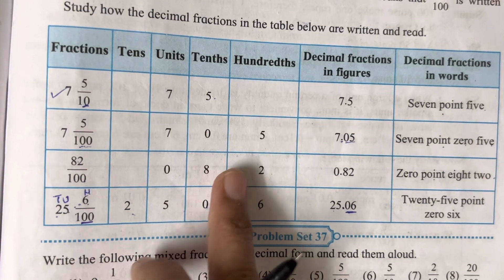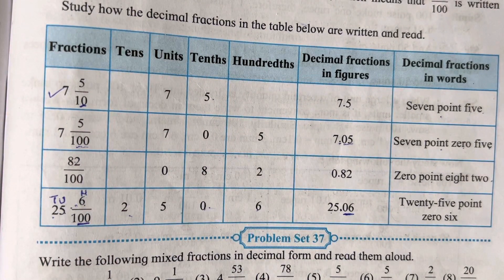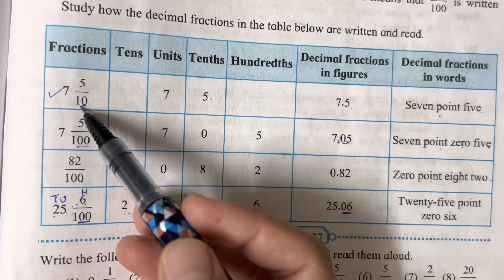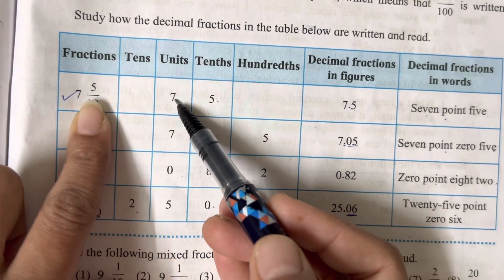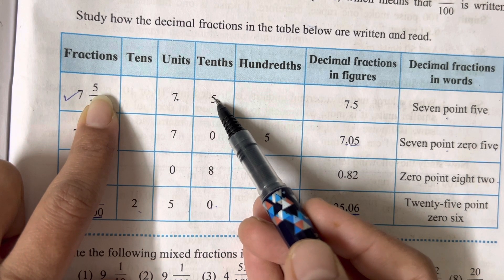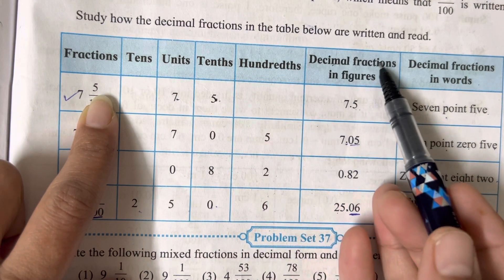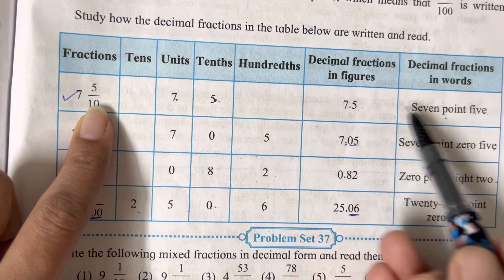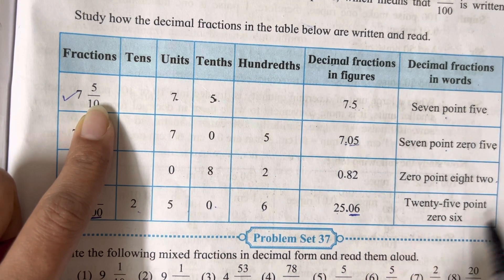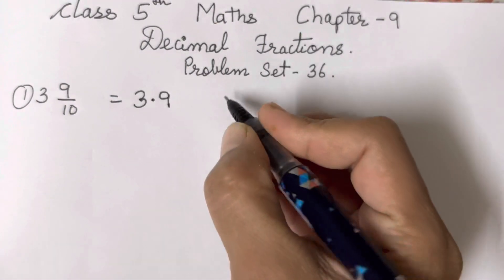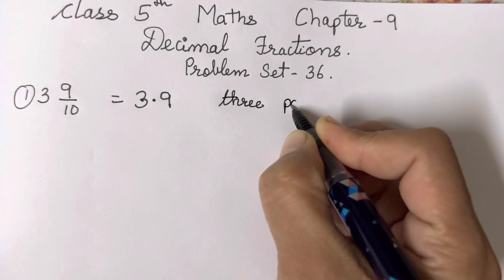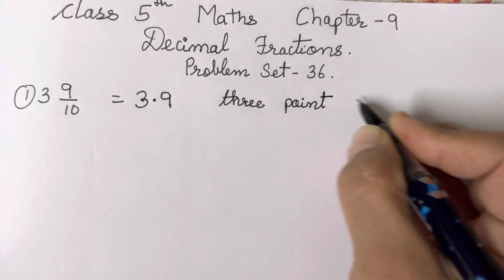This table has been given on page number 53, you can refer it. See, 7 and 5 upon 10, so 7 became unit, 5 became tens, and decimal fraction in figures is 7.5. In words we are going to read it as seven point five. We have to read this also, so this will be 3.9, three point nine.